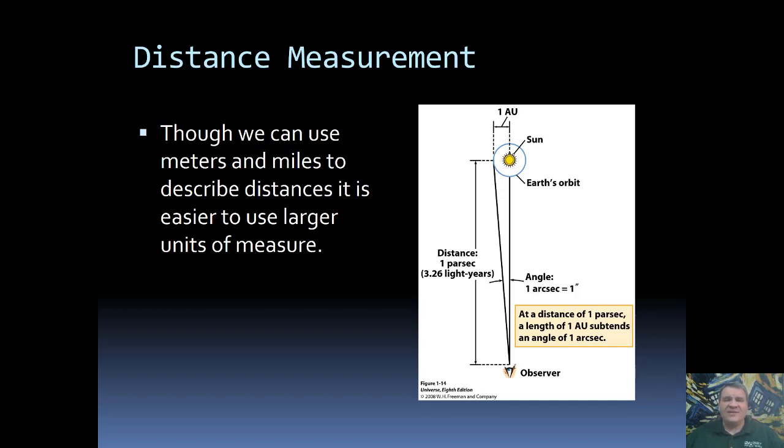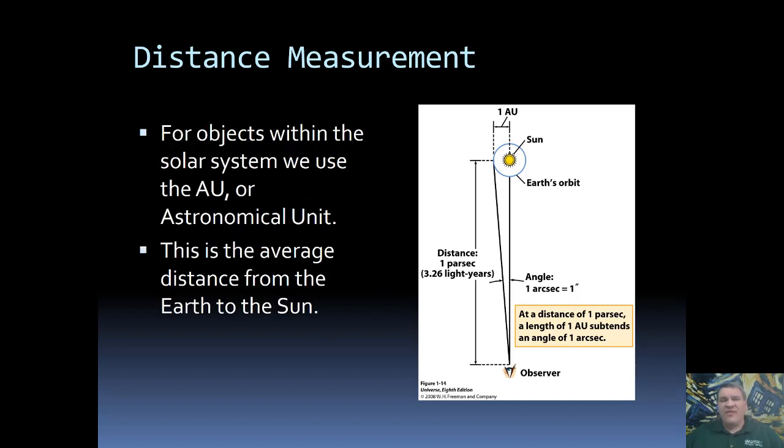Because of that, in astronomy, we actually use much larger units of measure. For things that are within our solar system, the preferred unit is the astronomical unit, or the AU. The astronomical unit is defined as the average distance from the Earth to the Sun. In other words, the Sun is about 1 AU from the Earth.